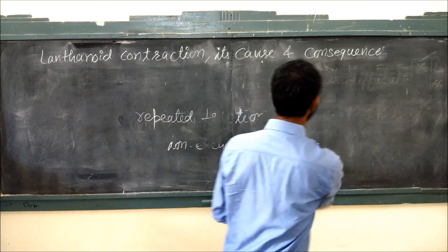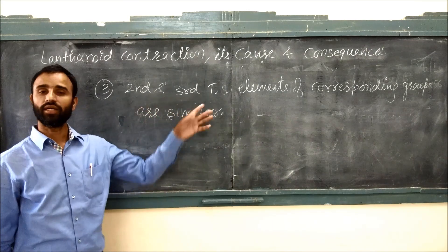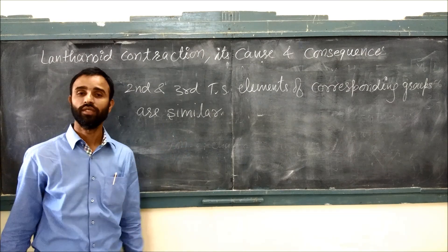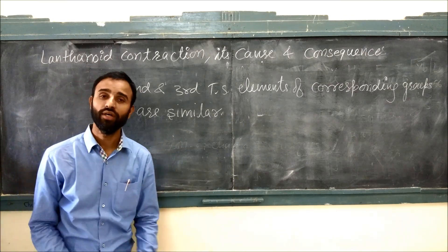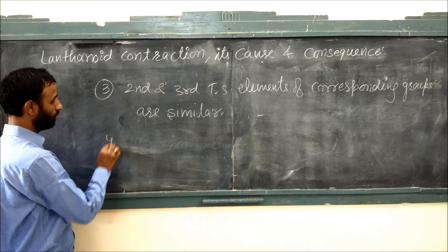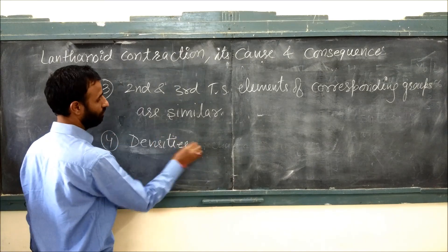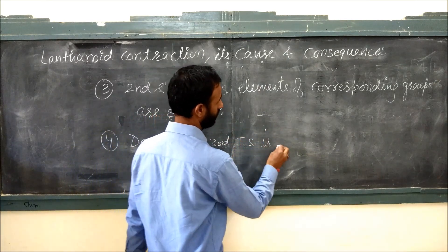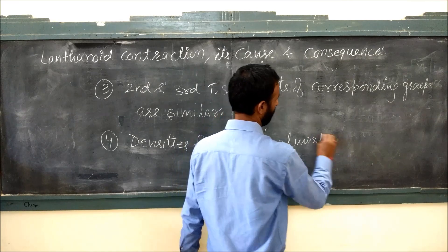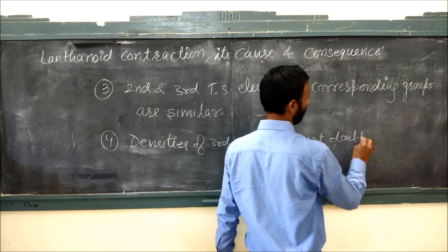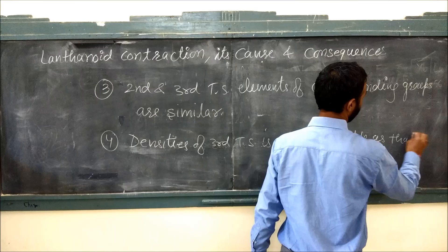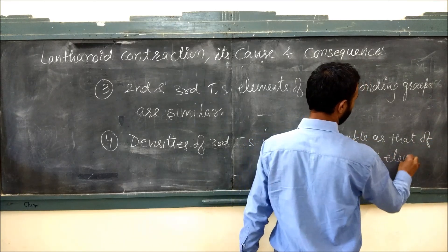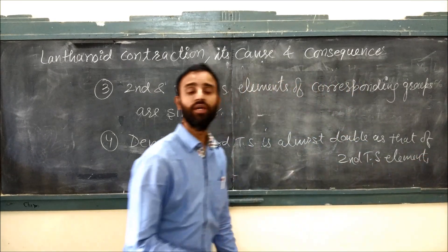The third consequence: the second and third transition series elements of corresponding groups are almost similar in size because of lanthanoid contraction. The fourth consequence is that the densities of third transition series elements are almost double those of second transition series elements, again because of lanthanoid contraction.